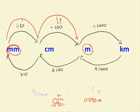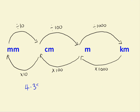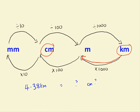What about one final example? 4.38 kilometres equals how many centimetres? To get between these, we're going from kilometres to centimetres, so we times by 1000 and then times by 100. Because we're multiplying, the number's going to get bigger. I move the decimal place 1, 2, 3, 4, 5 times to the right. So in 4.38 kilometres there are 438,000 centimetres.